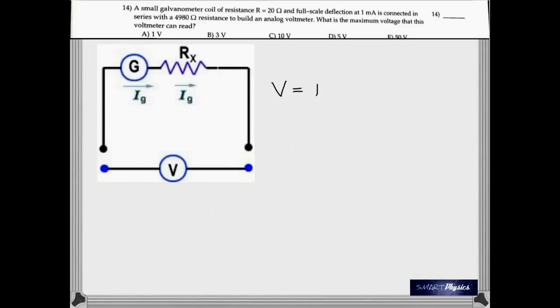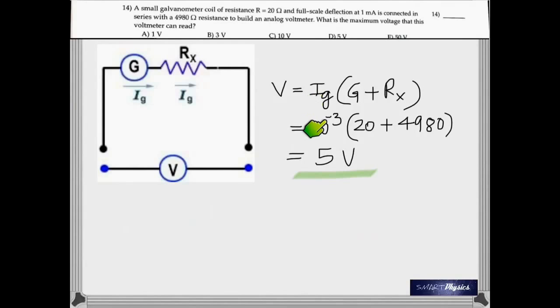This question is about converting a galvanometer into a voltmeter. Because it says what is the maximum voltage. And in order to do that as shown in the diagram, all you have to do is connect a high resistance in series with it. So now the total resistance of this becomes G plus Rx. Therefore the voltage is the current flowing which is IG times the total resistance. All these numbers are given. IG is in milliampere. That's why it's 10 to the negative 3 in amperes. And you get 5 volt.